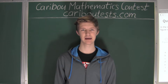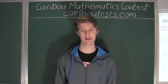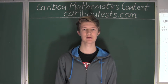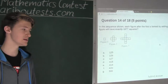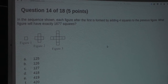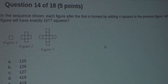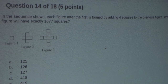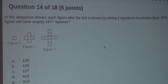This video is about the Caribou Mathematics contest. I'm going to show the solution for the January 2016 grade 5-6 contest question 14, which also came up in the grade 7-8 and 9-10 contests. The question is: in the sequence shown, each figure after the first is formed by adding four squares to the previous figure. What figure will have exactly 1,677 squares?